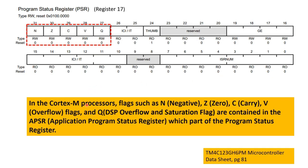The zero flag — in the Cortex-M processor, flags such as the N (negative) flag, Z (zero) flag, C (carry) flag, V (overflow) flag, and Q (DSP overflow and saturation) flag are all contained in the Application Program Status Register (APSR), which is part of the Program Status Register (PSR).